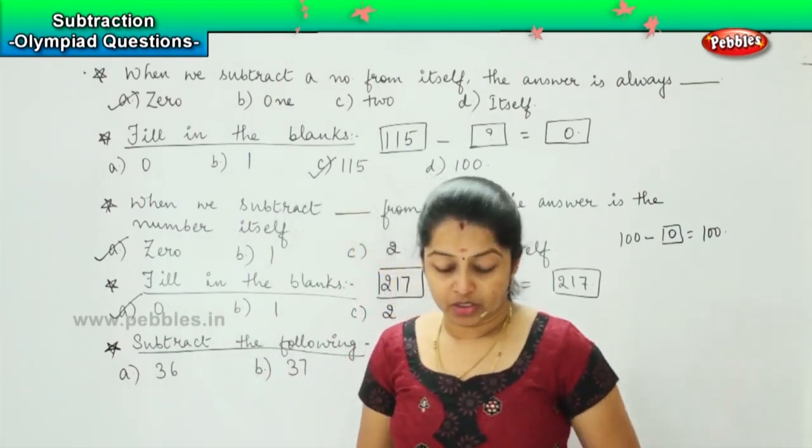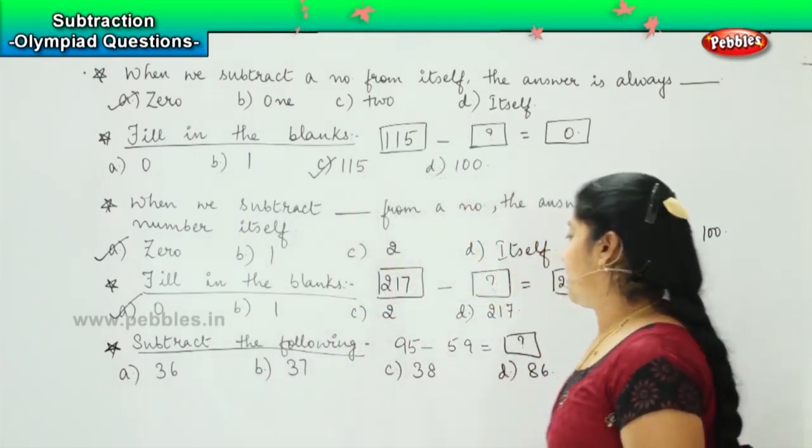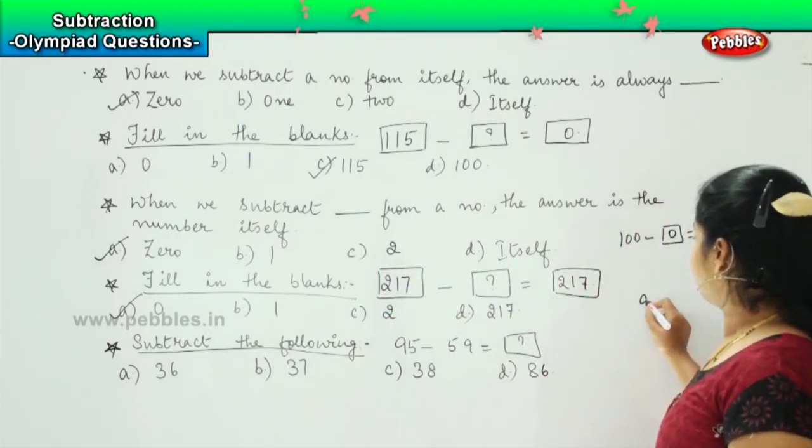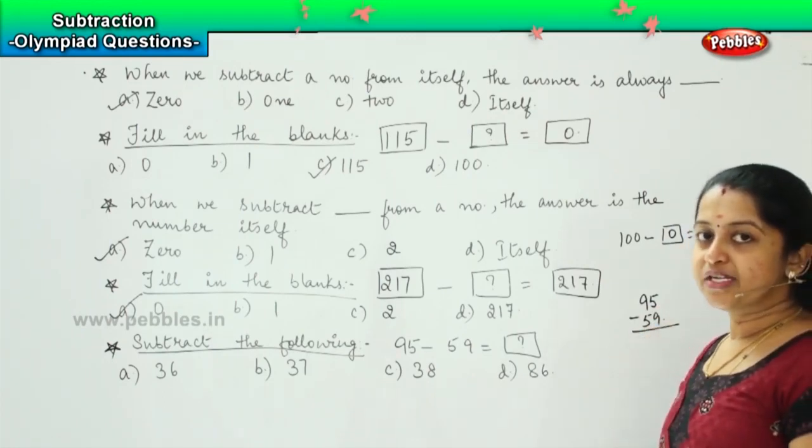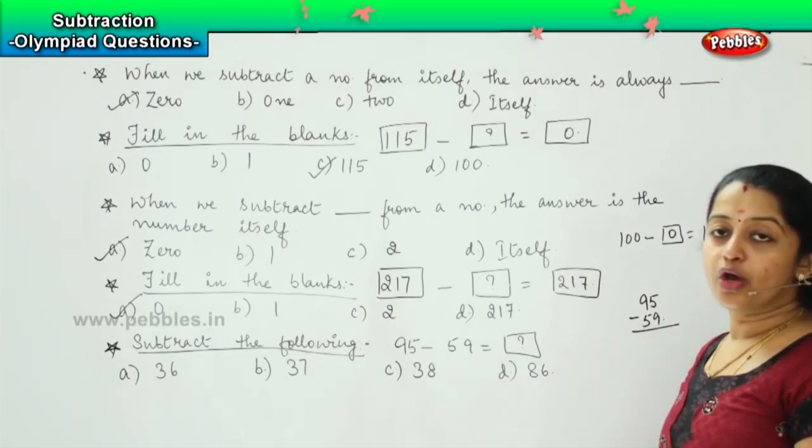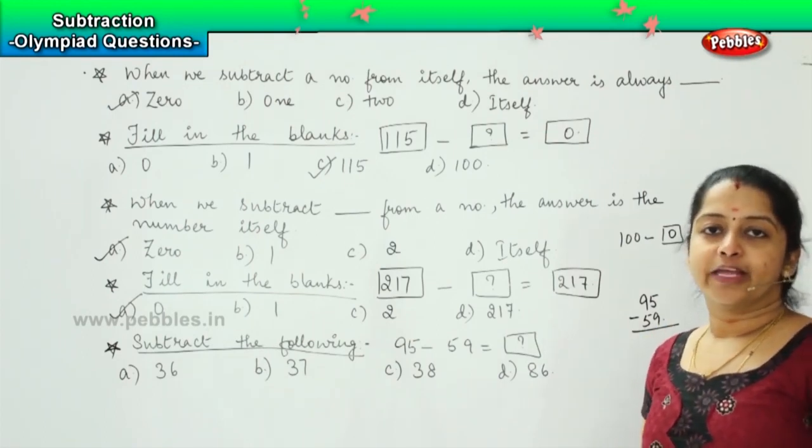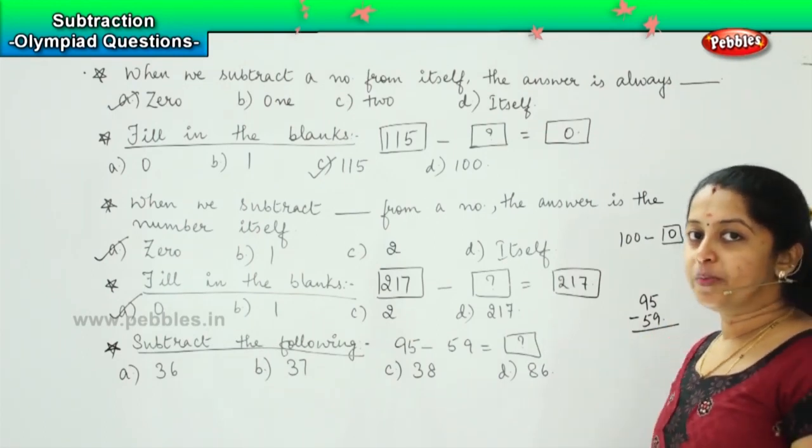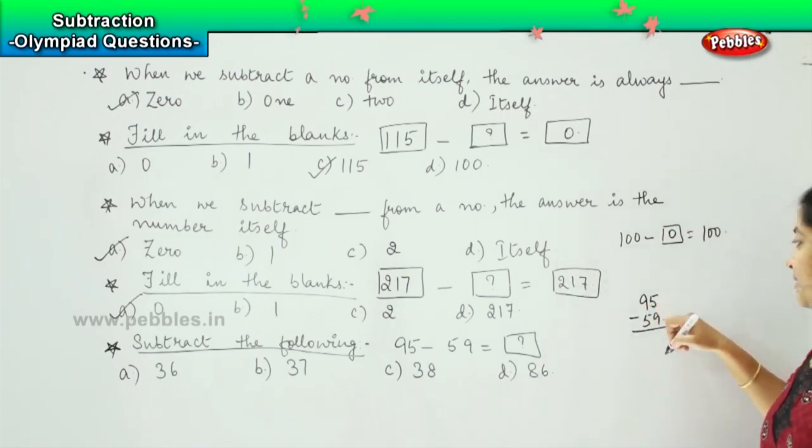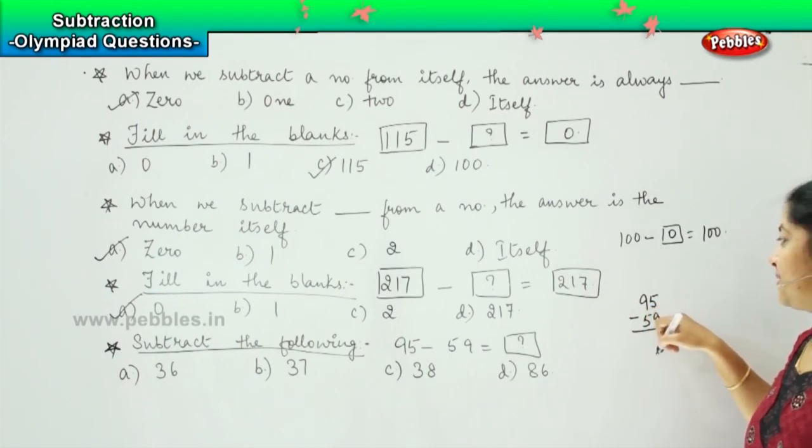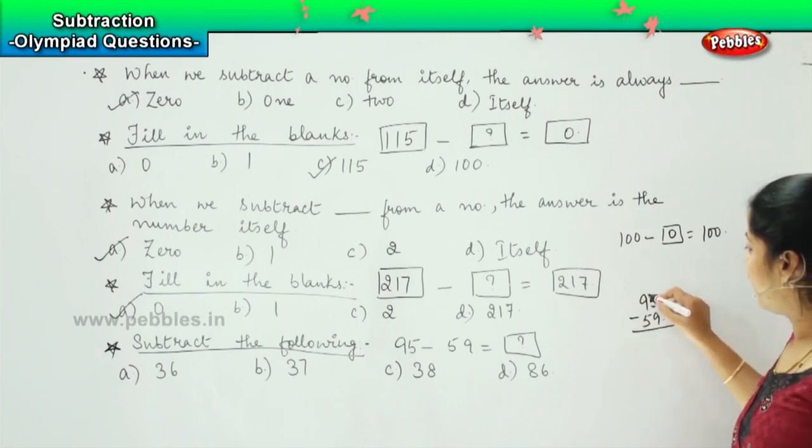Okay. So let's try to find out the answer. 95 minus 59. So what method will we use here children? Is it with regrouping or without regrouping? Very good. It is going to be with regrouping, right? So here my number above is lesser than the one given below. So which means that my minuend is lesser than the subtrahend. So I am going to borrow from the tens. Fine.